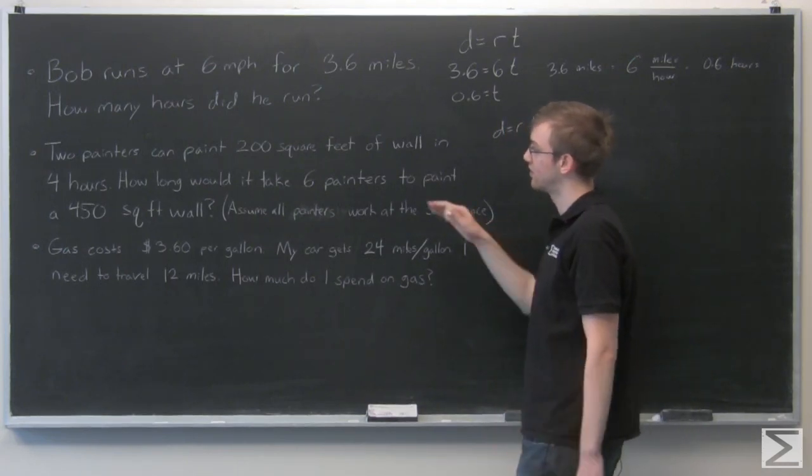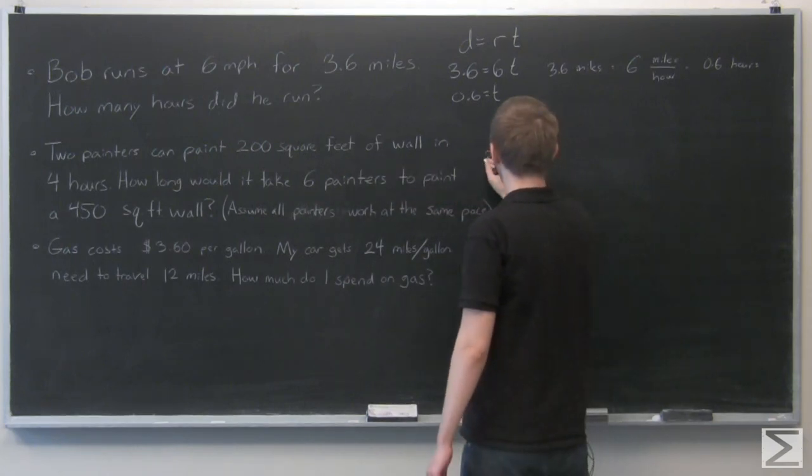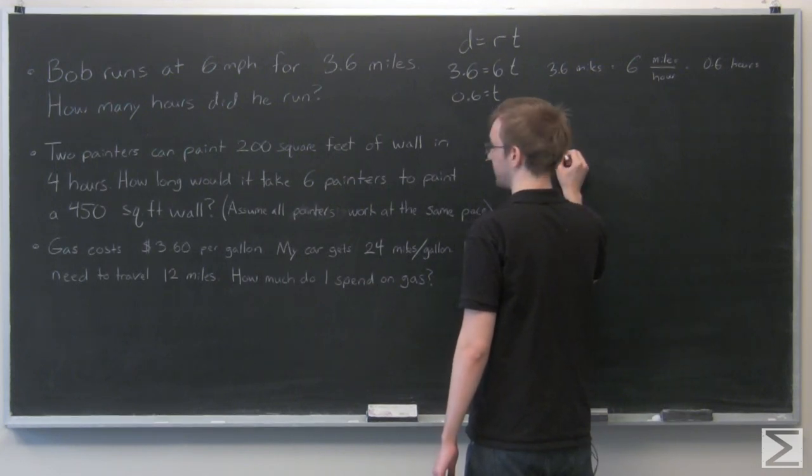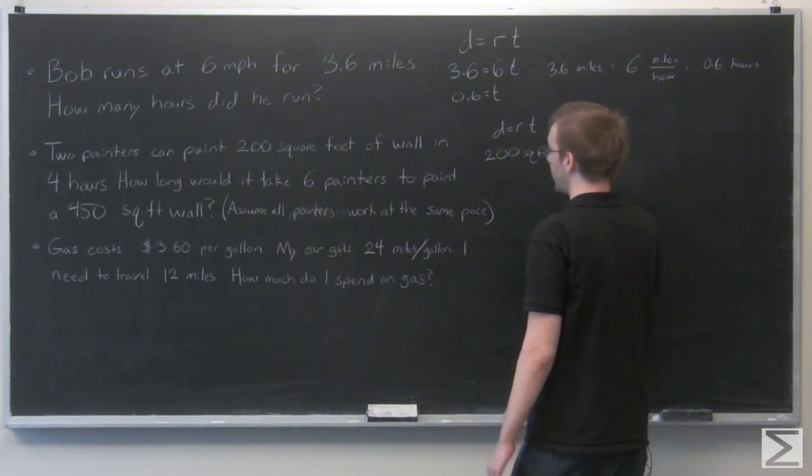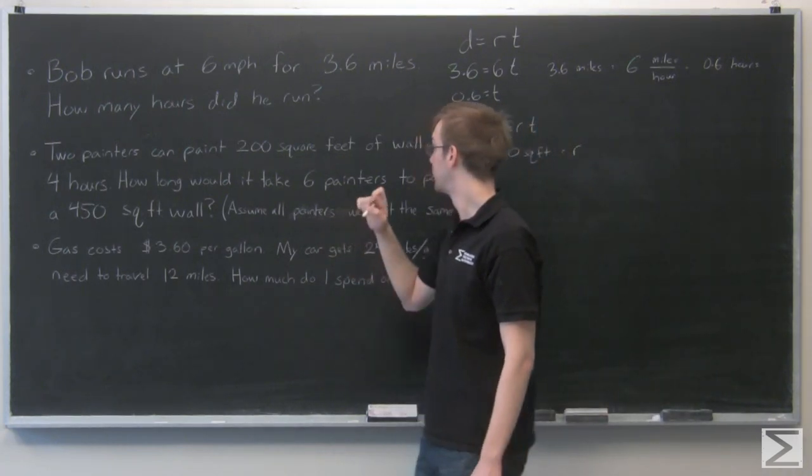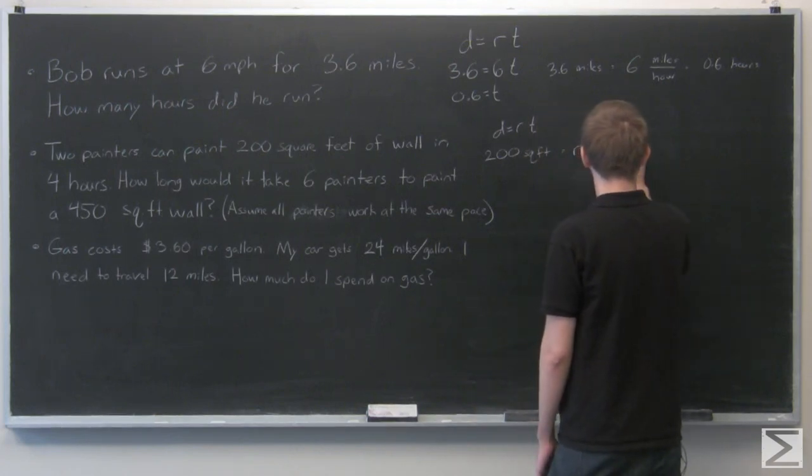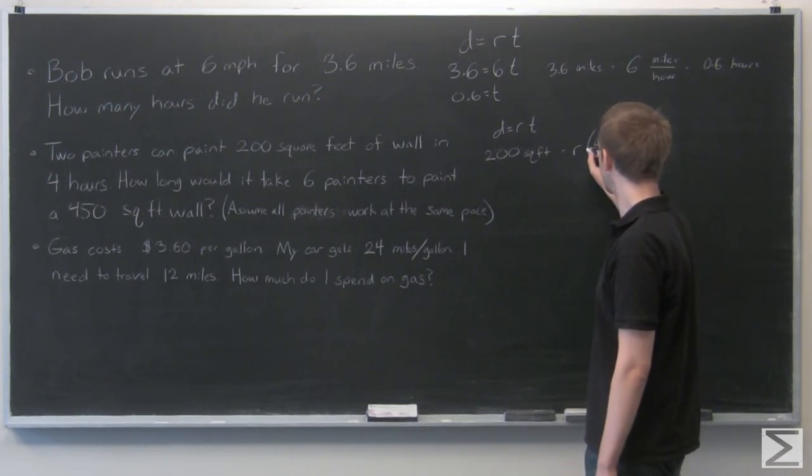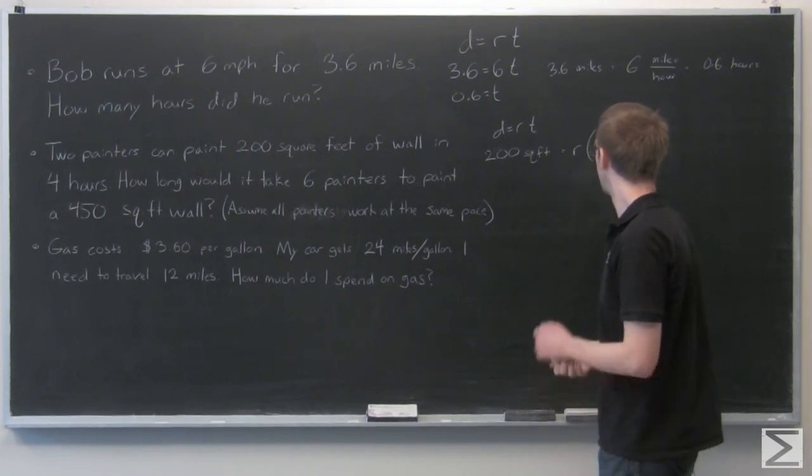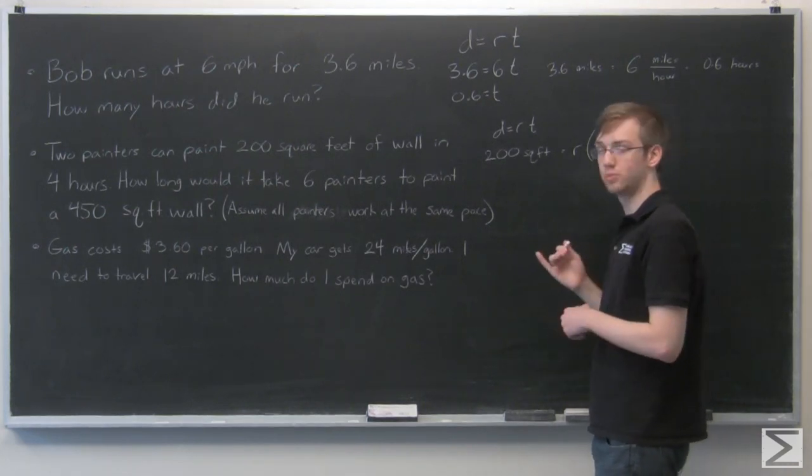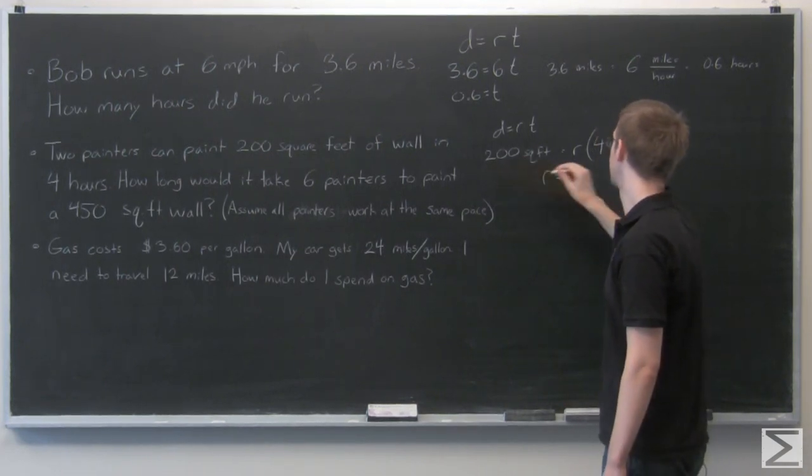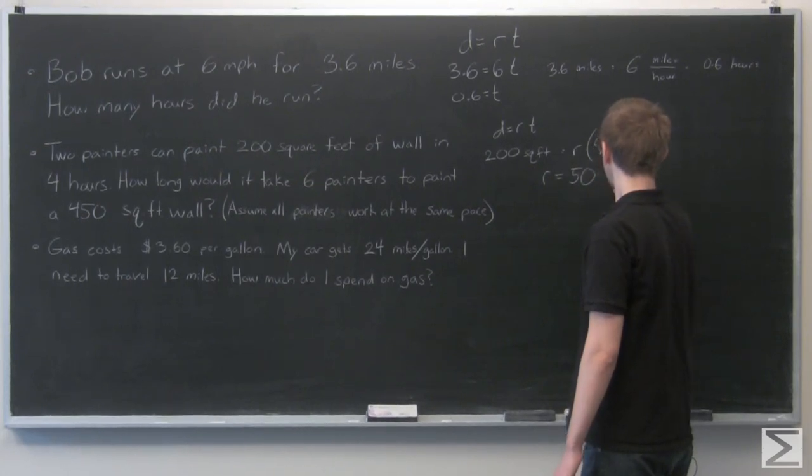Here, our distance is 200 square feet of wall, and that's equal to a certain rate that they got this job done times four hours. So now we can solve for the rate it takes two painters to paint 200 square feet. And the rate would be 200 over 4, which is 50, and that is square feet per hour.